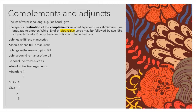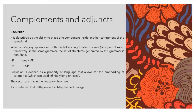There is one more topic you need to know: recursion. Recursion is described as the ability to place one component inside another component of the same kind — like an NP inside another NP inside another NP. When a category appears on both the left and right side of a rule, the set of structures generated by the grammar is non-finite. You can add however many NPs, PPs, or VPs as you want to a sentence.